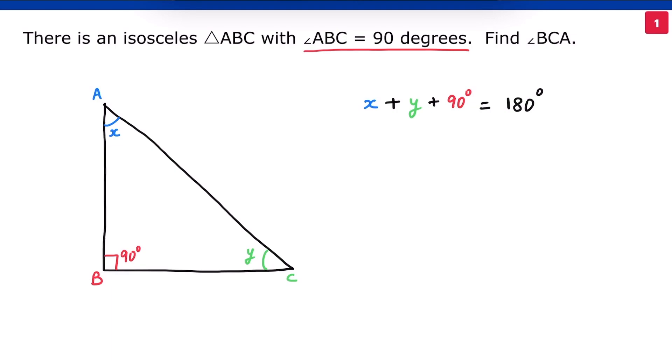The triangle is isosceles. We have two equal sides, but which ones? Remember, hypotenuse is the longest side in a right angled triangle. This means AB has to be equal to BC to make this triangle isosceles.